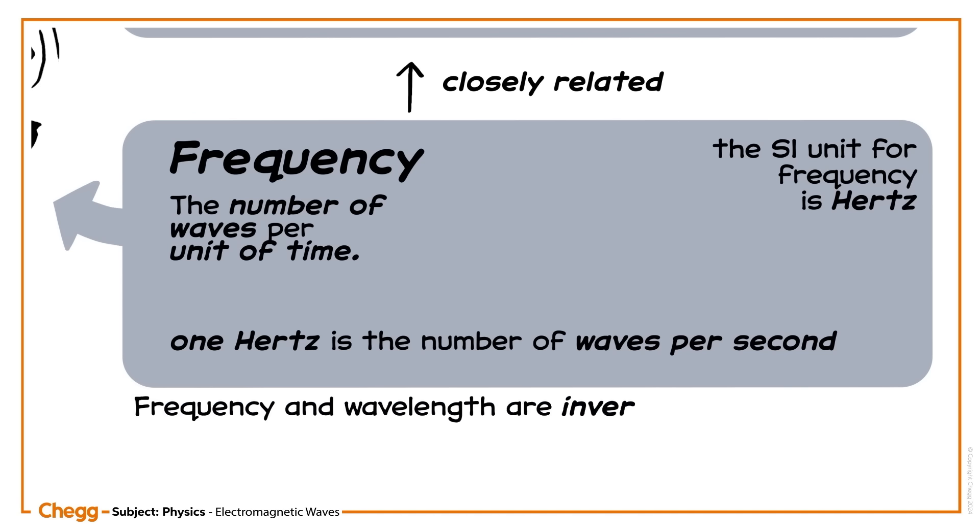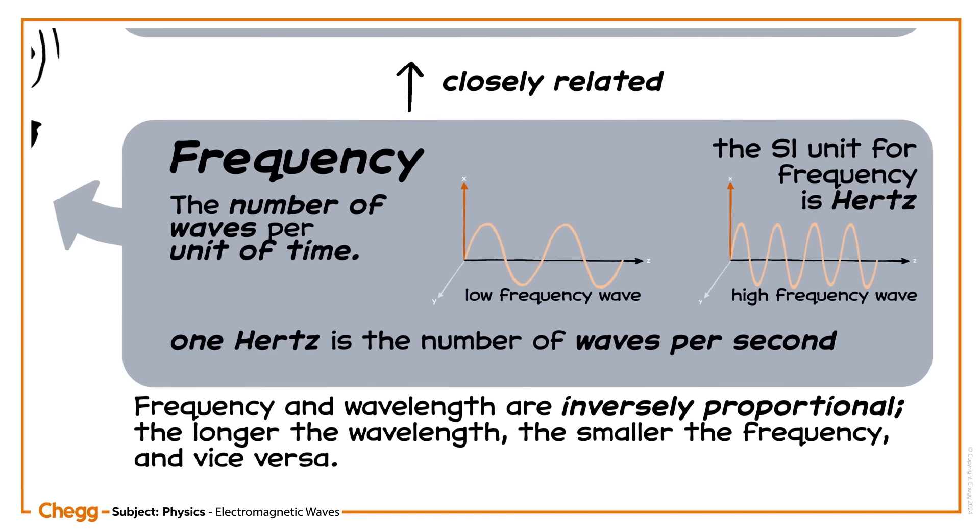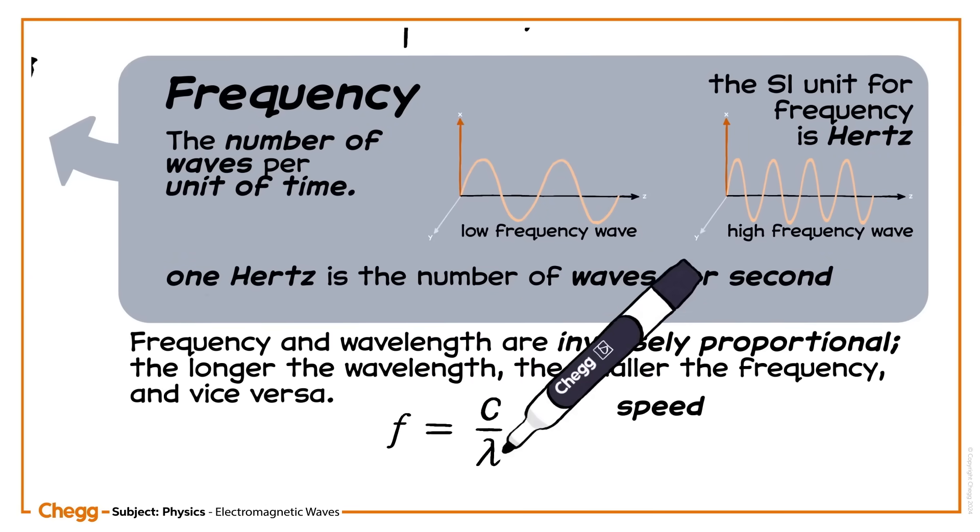Frequency and wavelength are inversely proportional. The longer the wavelength, the smaller the frequency, and vice versa, following the equation: frequency equals speed (c) divided by wavelength (λ).